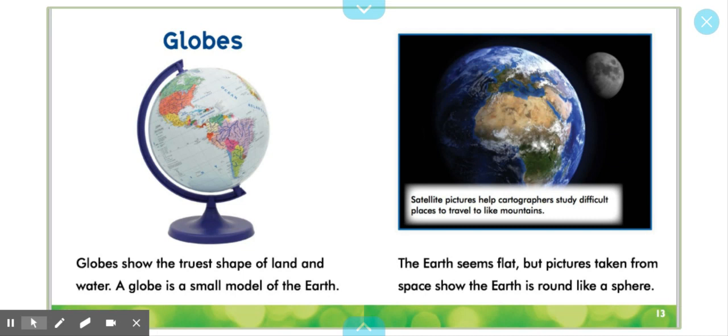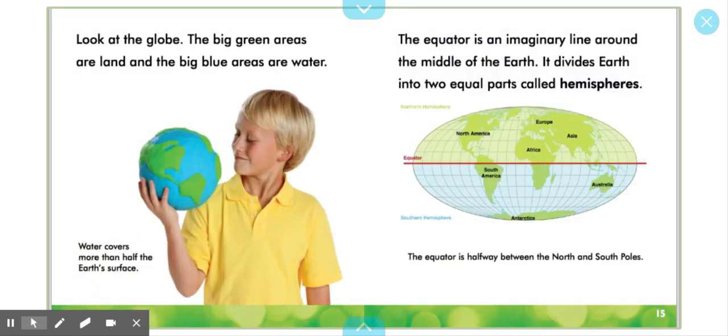The Earth seems flat, but pictures taken from space show the Earth is round like a sphere. Look at the globe. The big green areas are land and the big blue areas are water. Water covers more than half the Earth's surface.